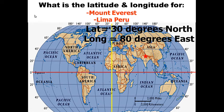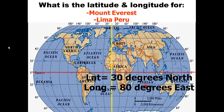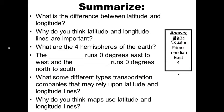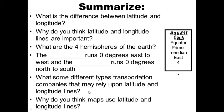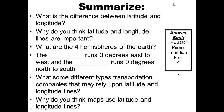Hopefully you got these right and you're getting the gist of it, because there will be latitude and longitude coordinates on the test. For your summary: What is the difference between latitude and longitude? Why are these imaginary lines important? What are the four hemispheres of the Earth? The blank runs zero degrees east to west and the blank runs zero degrees north to south. What are some transportation companies that rely on latitude and longitude? Go ahead and pause this — your summary box should be filled up for 20 points. Thank you for doing this and we'll see you next time for day two of three. Have a good night.